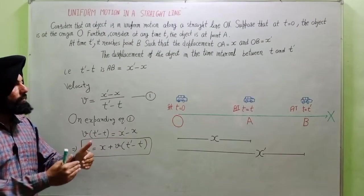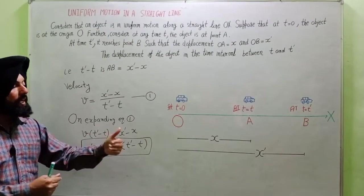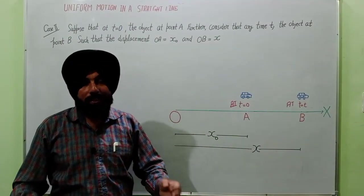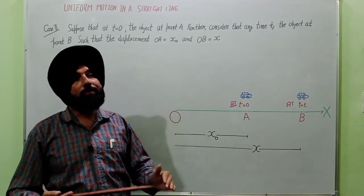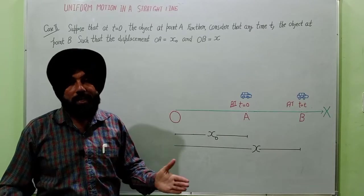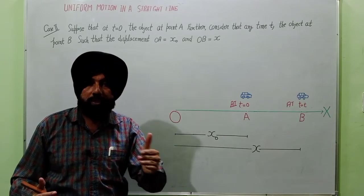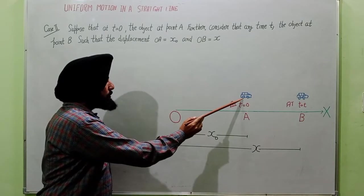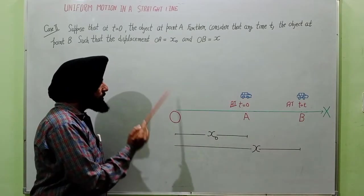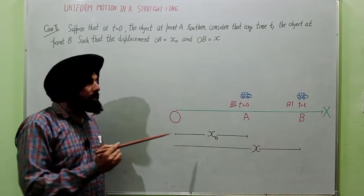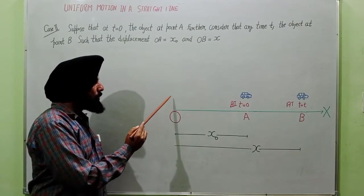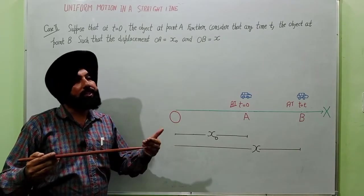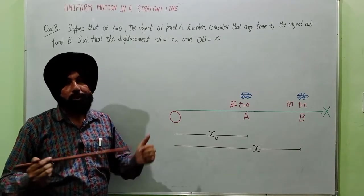In the first case, we have derived the expressions for displacement when the object — our car — is present at the origin when the time t was 0.